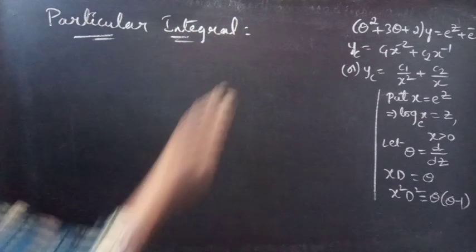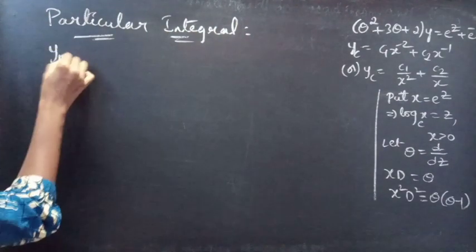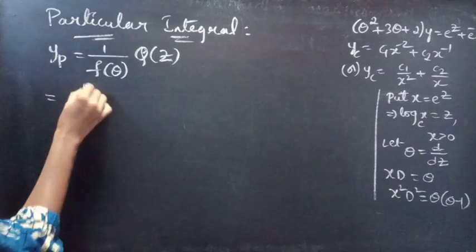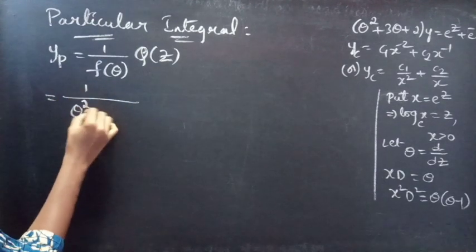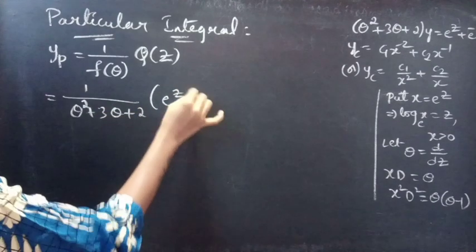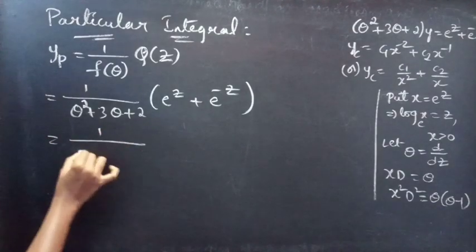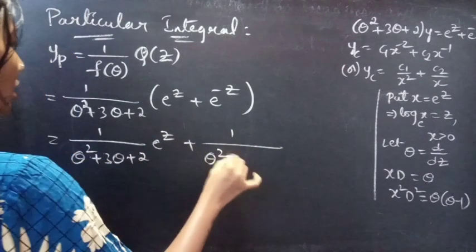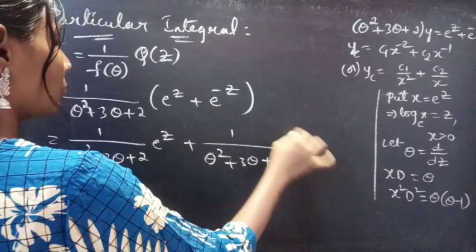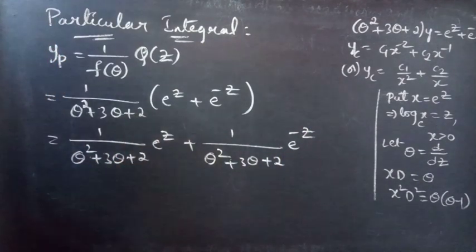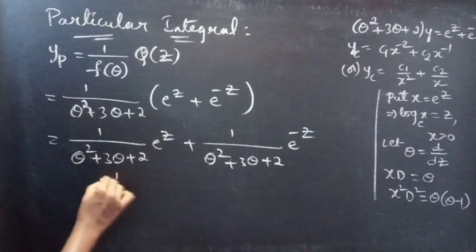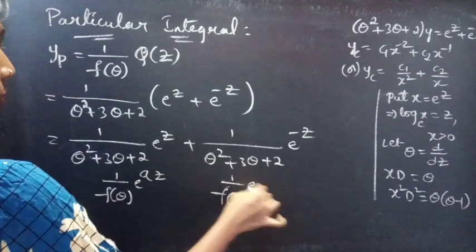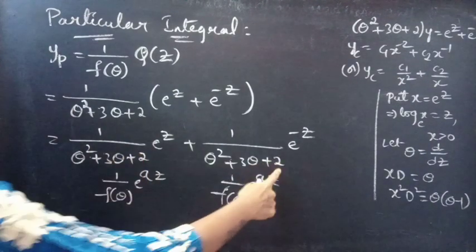For the particular integral, yp = [1/f(theta)] · Q(z), where f(theta) = theta² + 3theta + 2 and Q(z) = e^z + e^(−z). We split this as: [1/(theta² + 3theta + 2)]·e^z + [1/(theta² + 3theta + 2)]·e^(−z). Both terms are of the form [1/f(theta)]·e^(az), with a = 1 and a = −1 respectively.